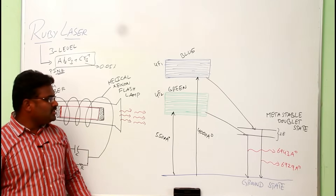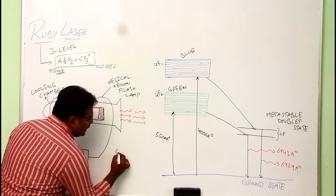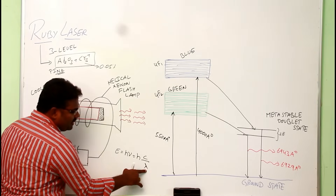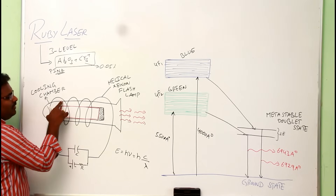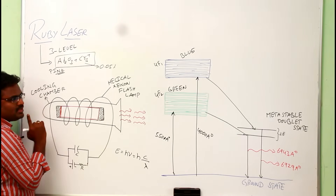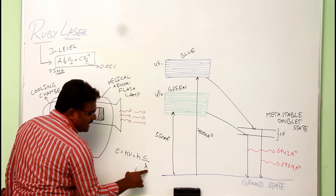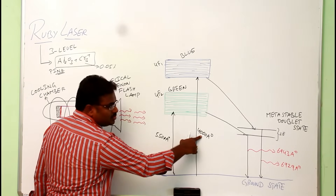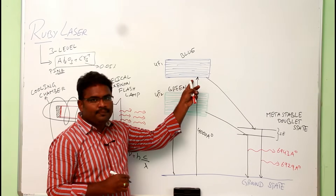Don't think that by absorbing 5500 angstroms the atoms go to the lower energy state. The energy of a photon is E = hν = hc/λ, so more wavelength means less energy. Since 5500 angstroms is a higher wavelength, it carries less energy, so the atoms go to the lower excited level. Since 4000 angstroms is less wavelength, it carries more energy, so atoms go to the higher excited state.